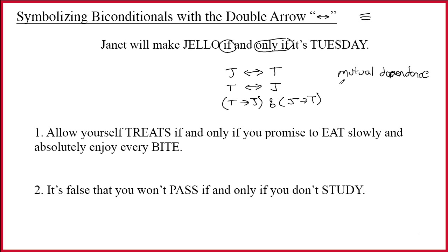Another way to think about it is one-to-one correlation: the two parts correspond to each other. They are correlated, so a one-to-one correlation or one-to-one correspondence is a good way to understand the biconditional.